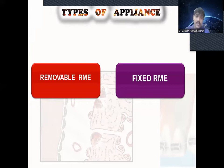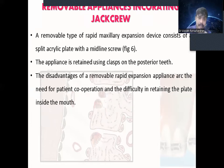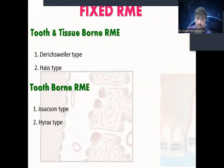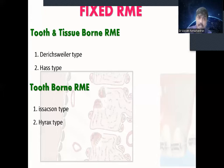Next, the types of RME. There are two types: removable RME and fixed RME. Removable RME can be removed by the patient. But mainly fixed RMEs are used compared to removable RME. In fixed RME we can classify it into two types: tissue or tooth support, and tooth-bone RME. Examples for tooth and tissue supported RME are the Spieler type and Haas type; and for tooth-bone RME, Isaacson and Hyrax. Tooth and tissue RME takes support from both the tooth and tissue, while tooth-bone RME takes support only from the teeth.